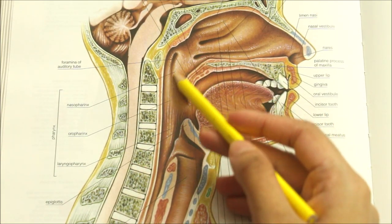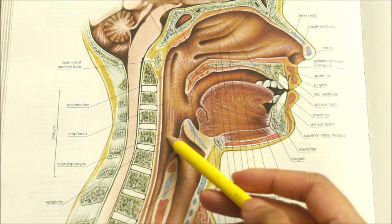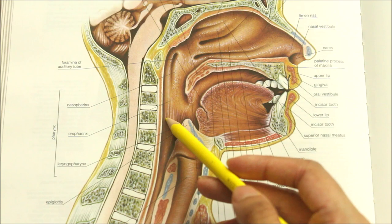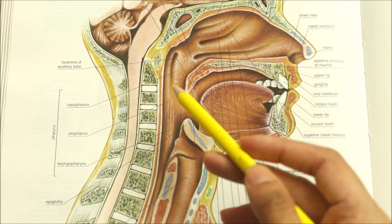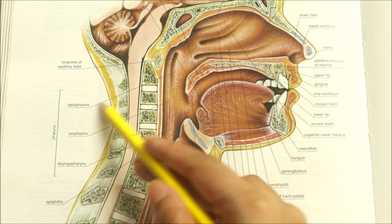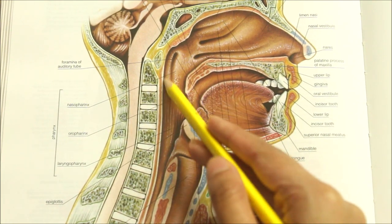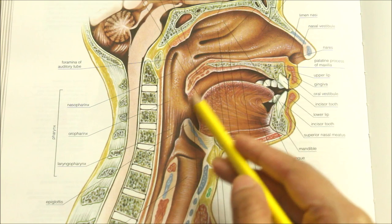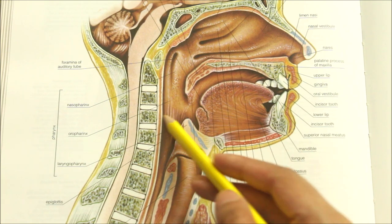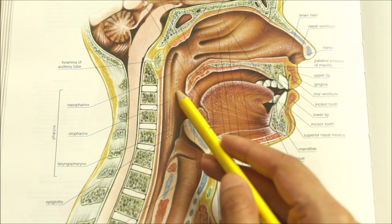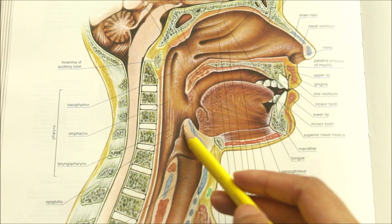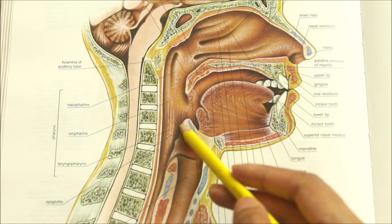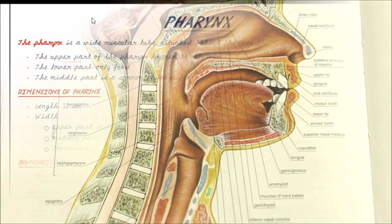The cavity of the pharynx is divided into three parts: the nasal part, called the nasopharynx; the oral part, called the oropharynx; and the laryngeal part, called the laryngopharynx.